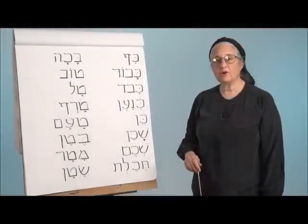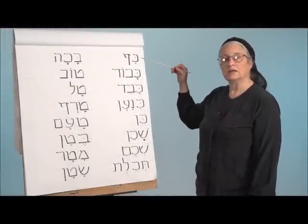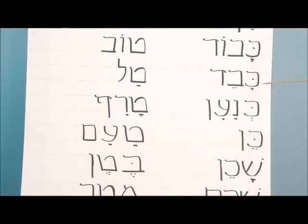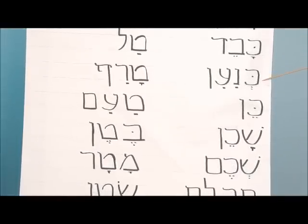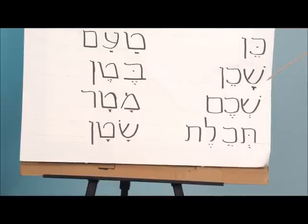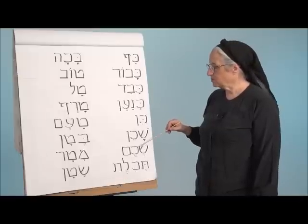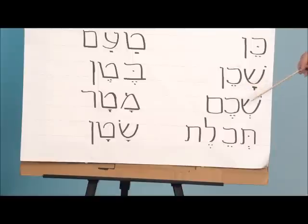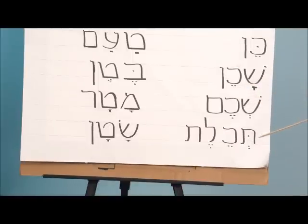We're in Lesson 9 of our reading exercises. Kaf, kavod, kaved, Kena'an, ken, shachen, Shchem — now this is going to be difficult for you to pronounce, because we hardly make this 'ch' sound at all, and now we have to put something that's in the front of the mouth, the Shin, right before it. So just practice: Shchem. Another difficult one: techelet. We do have a Shva here, we can make a small noise — techelet.